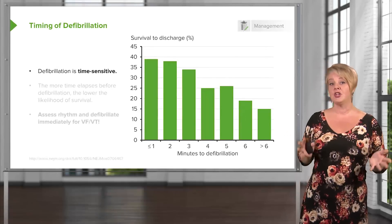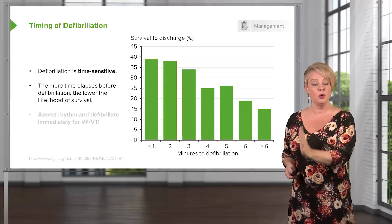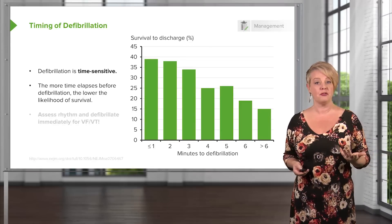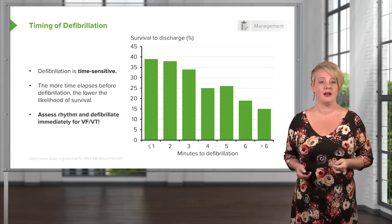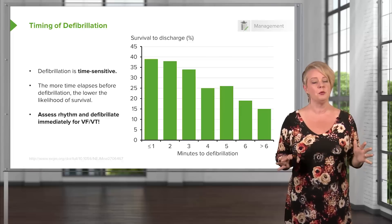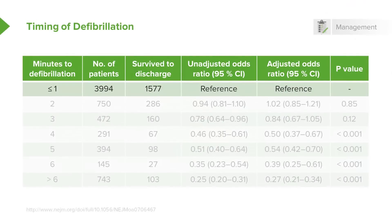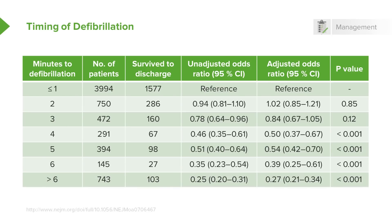Defibrillation is a time-sensitive intervention, and this graph clearly shows why. The more time that elapses, the lower the likelihood of survival. Patients in shockable rhythms shocked within the first minute have a 35 to 40% survival rate. By six minutes, that drops to less than 20%. As we go to two, three, four, five, six, and more than six minutes, the odds ratio of survival goes down consistently with every minute that passes. We need to assess the rhythm and defibrillate as soon as we're humanly able to do so.